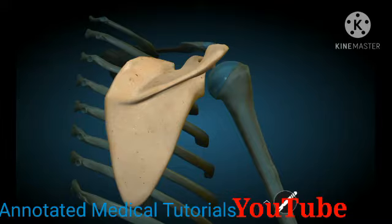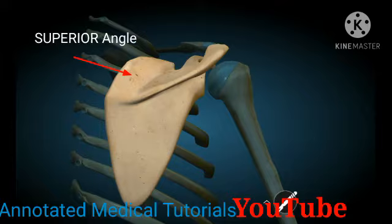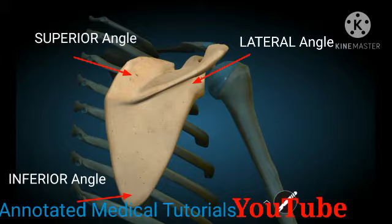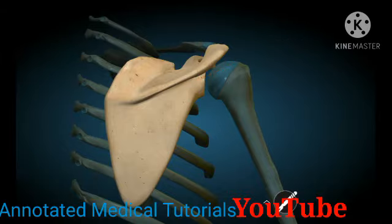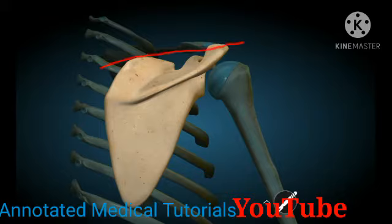For the angles we have got the superior angle, the inferior angle, and the lateral angle. If you don't really understand the terminology like inferior, superior, and lateral, please look at the link below so that you can watch the video on anatomical terms and positions. For the borders we have got the superior border, the inferior border, and the medial border.